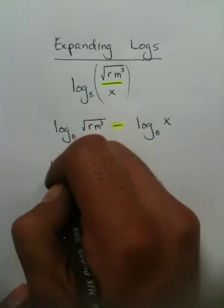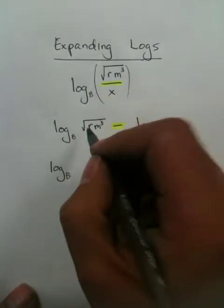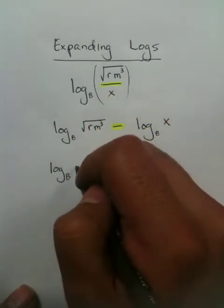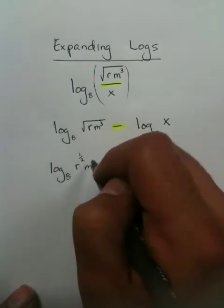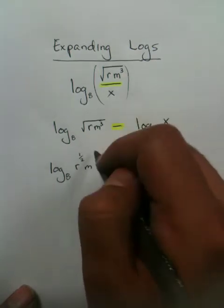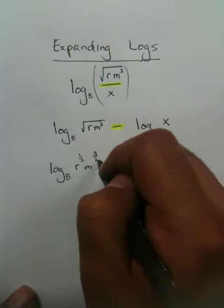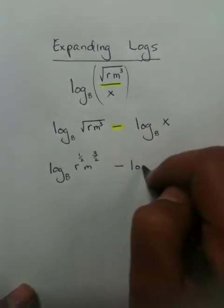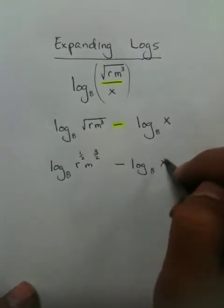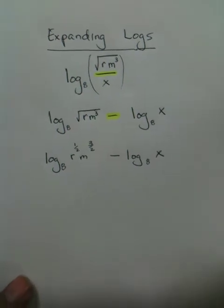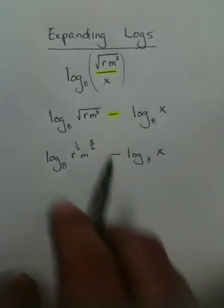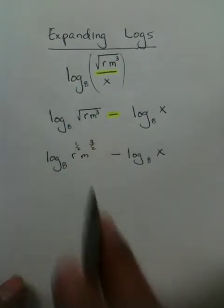The first thing is, a radical is the same thing as a one-half power. Now because I already have a power of 3 in here, that becomes a three-halves power. You can watch other of my videos for more explanation on why radicals are one-half powers.